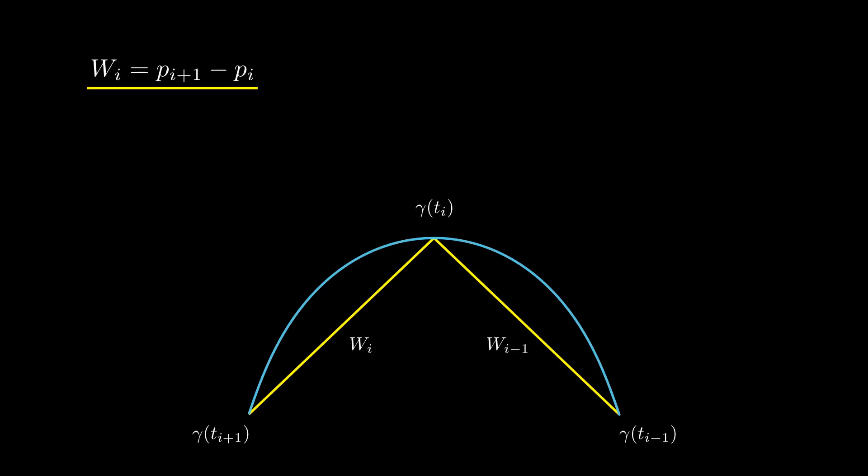Now, for each i, we let w_i be the vector going from p_i to p_{i+1}. We let α_i be the angle that goes from γ'(t_i) to w_i.